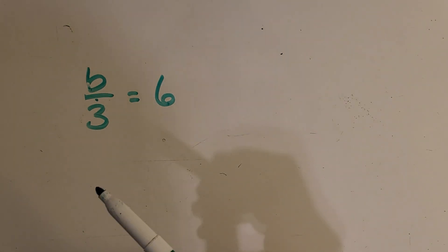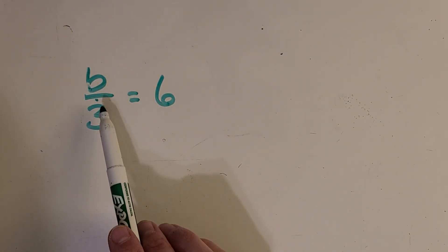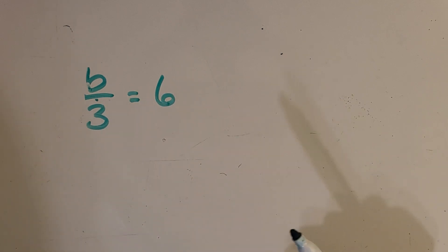So here's our next, or our last equation, b divided by 3 equals 6. And if I'm doing divide by 3, the first thing I think of is what is the opposite of that?